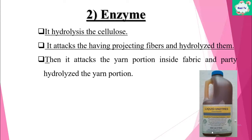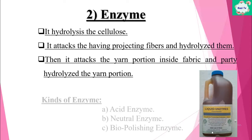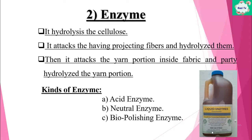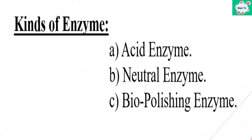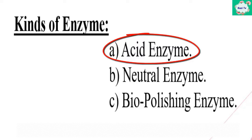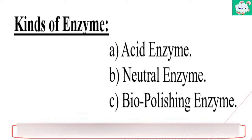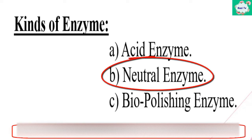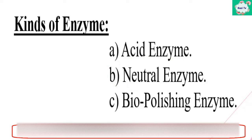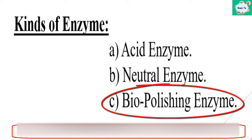The enzyme hydrolyzes the cellulose — it attacks the projecting fiber and hydrolyzes them, then attacks the yarn portion inside the fabric and partly hydrolyzes it. As a result, color comes out from the yarn portion and a fading effect is produced. Generally three kinds of enzyme are used: acid enzyme, neutral enzyme, and biopolishing enzyme. Acid enzyme is used when we need a deep shade with more effect — it is found in liquid form. Neutral enzyme (powder form) is used for light shade with effect. When the fabric surface is hairy, biopolishing enzyme is used to remove hairiness — it is found in liquid form.